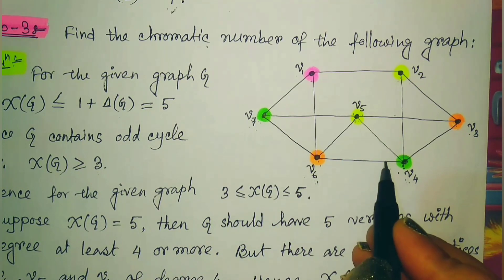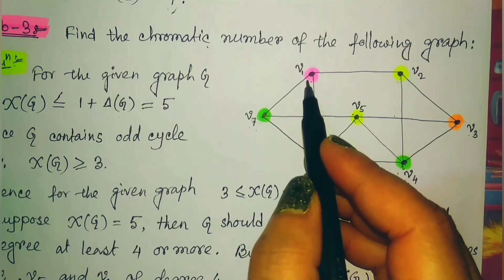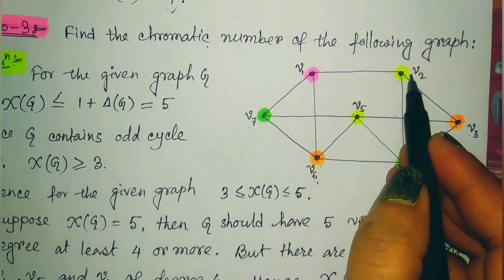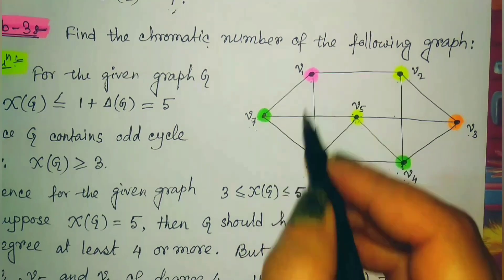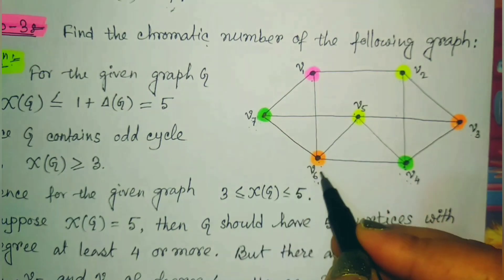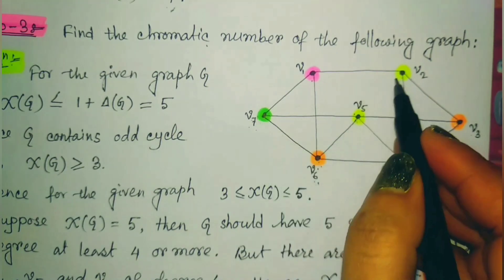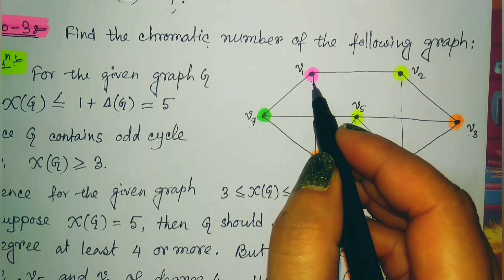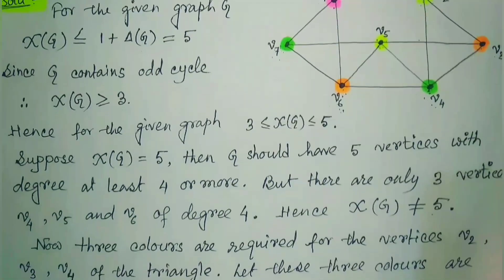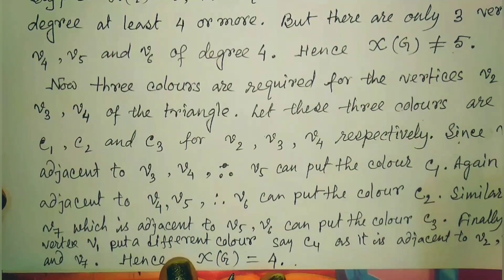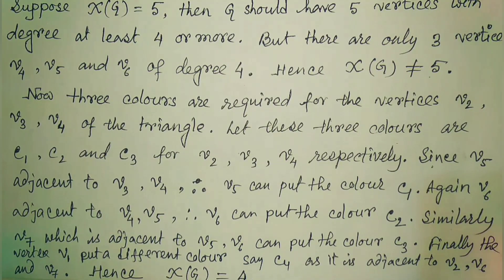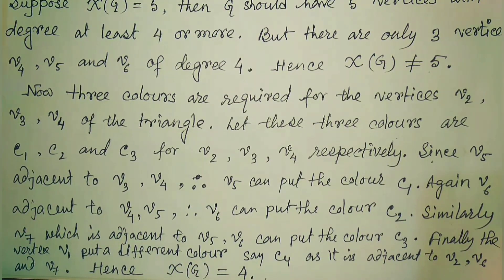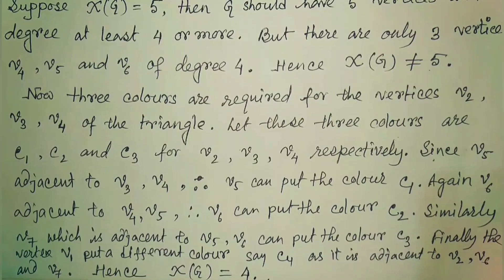One more vertex remains: v1. It is adjacent to v7, v2, and v6 — all three colors are already used among those neighbors. So v1 requires one extra, fourth color. Therefore the chromatic number of this graph is 4.